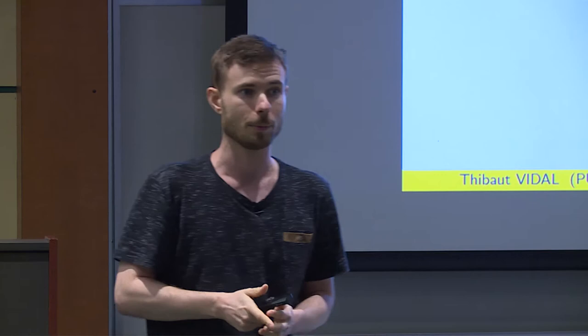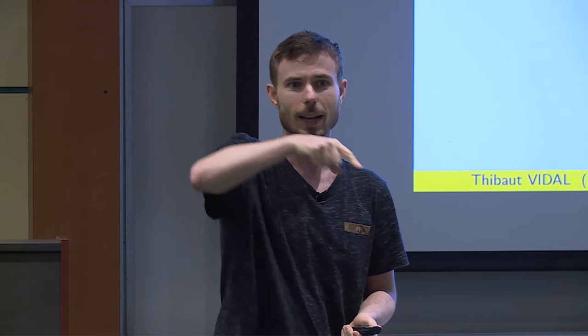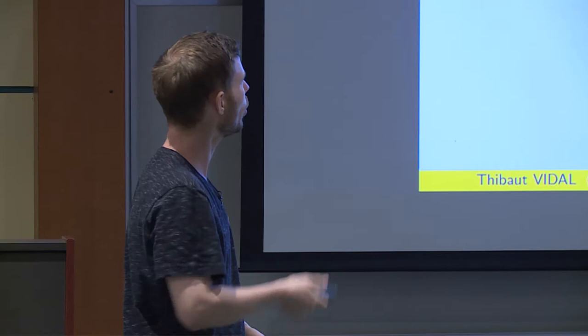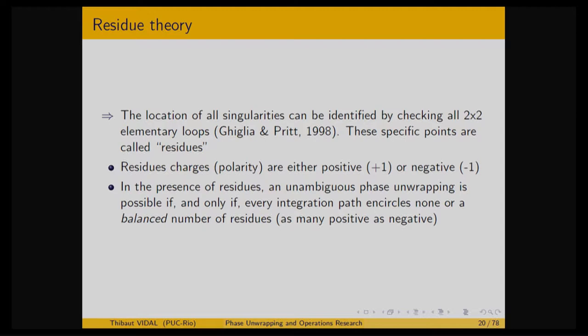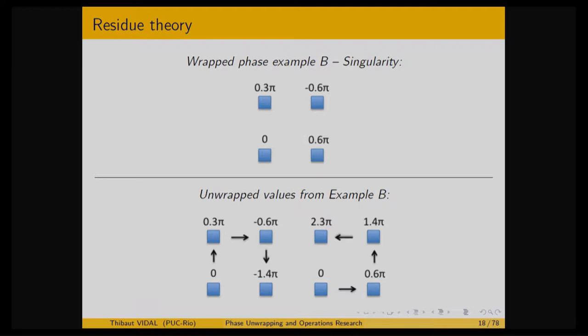To detect these problematic points, you take your signal and check the integral value on every square of 4 pixels — this is linear in the number of pixels. If you see something happening, you mark that point as a residue. There is a result that says there is an unambiguous solution to your phase unwrapping problem only if no integration path can enclose a residue. The approach is therefore to forbid paths from turning around residues by creating blockades in the data.